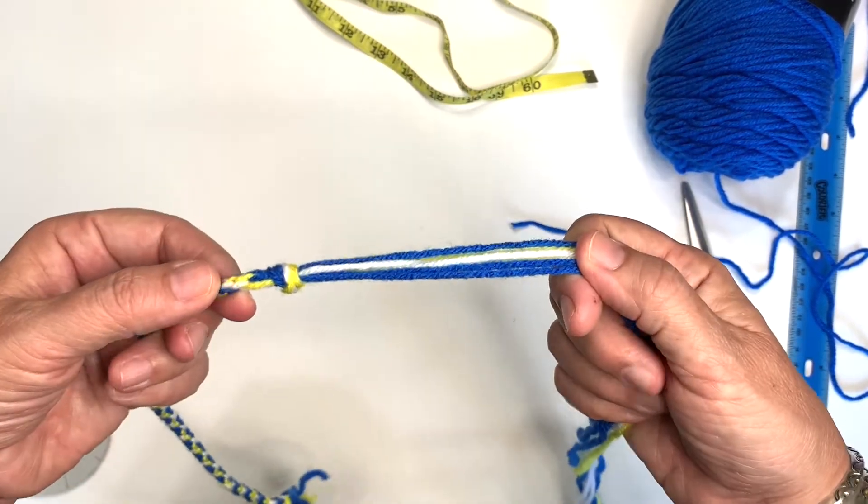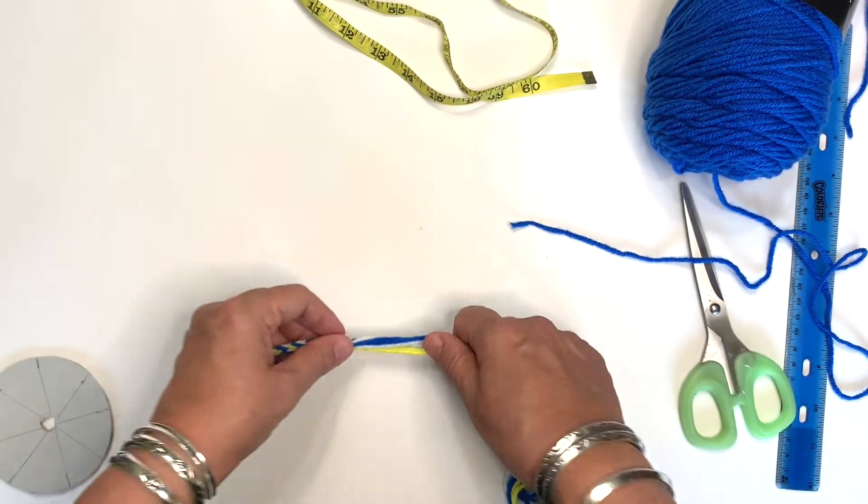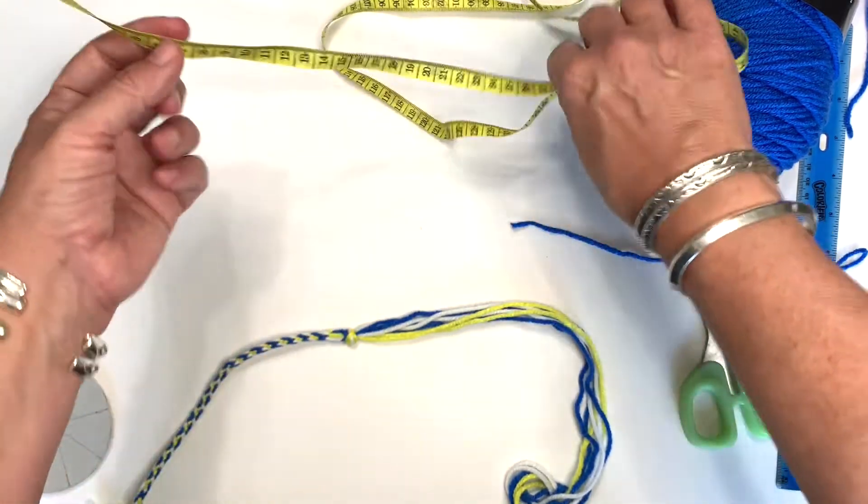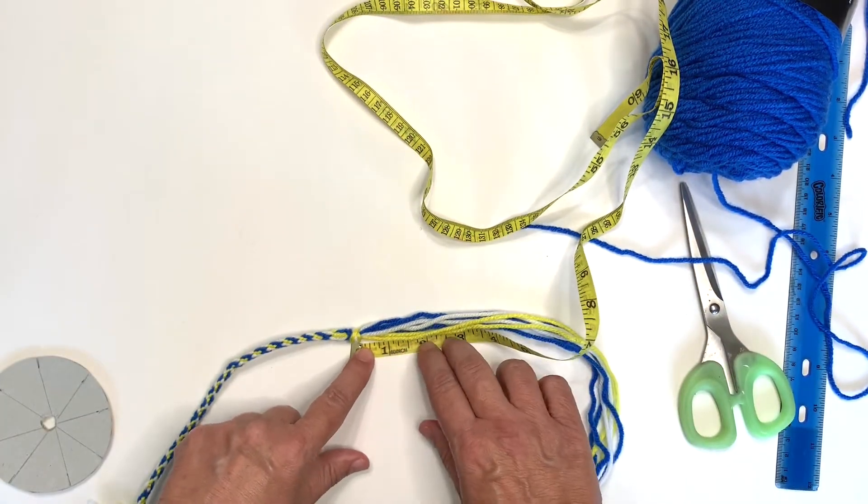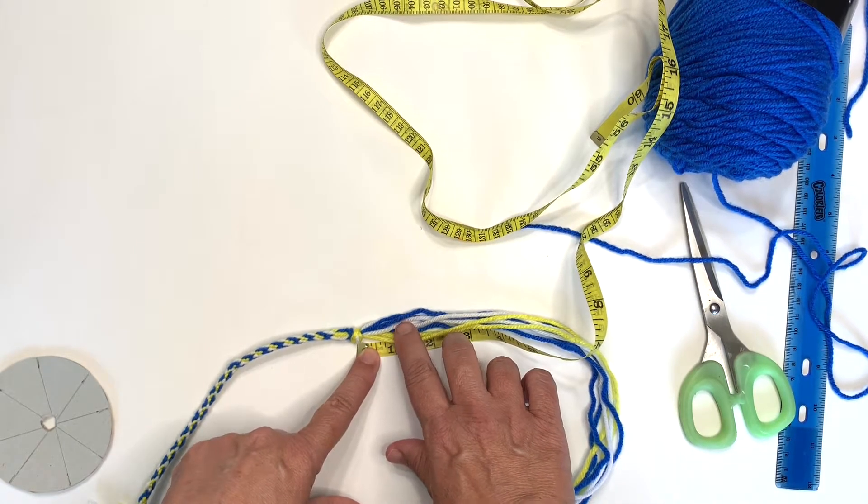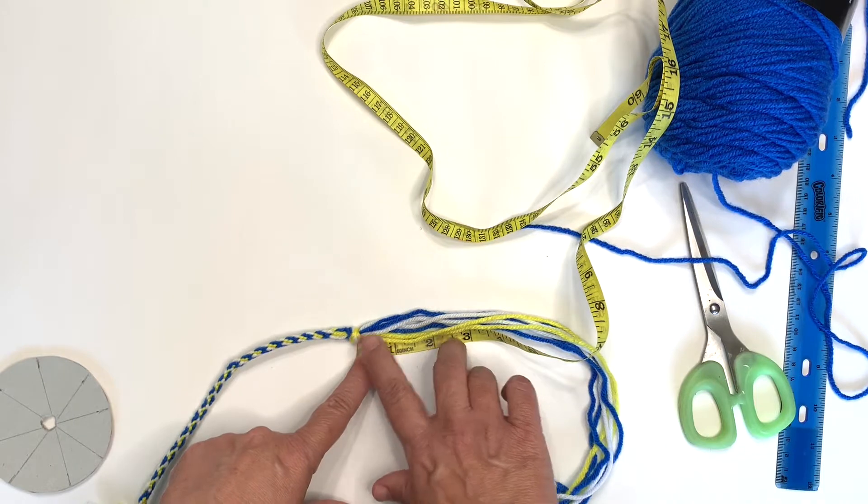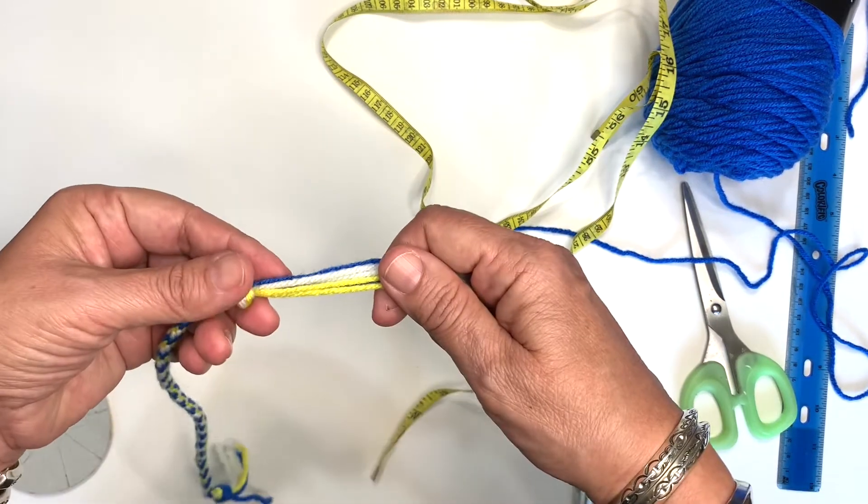On this end, where we finished, I'm going to measure about an inch. And I'm going to put another knot, like this one, right here. Like this.